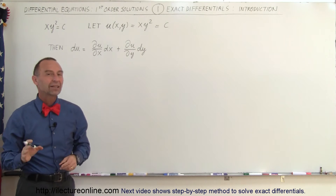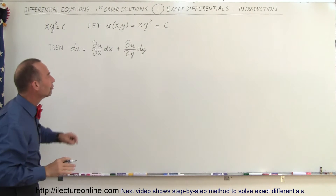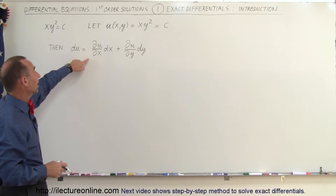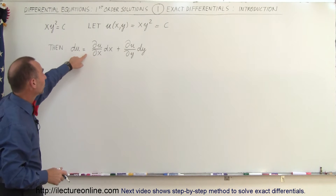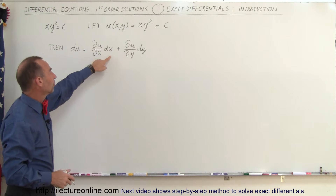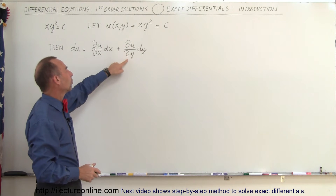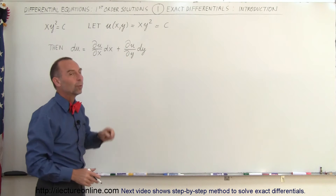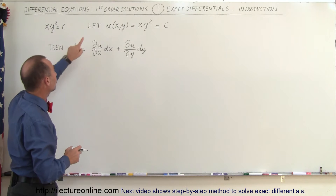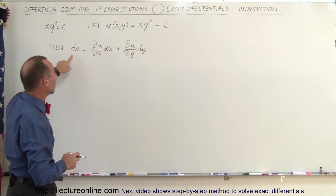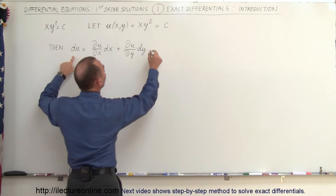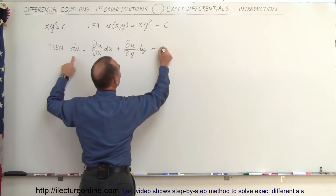When we take the differential of u, called du, we can say that it's the partial differential of u with respect to x times dx, plus the partial differential of u with respect to y times dy. And of course, if u is equal to a constant, then du must be equal to 0, so we can set this equal to 0.